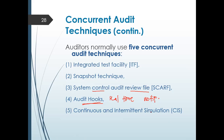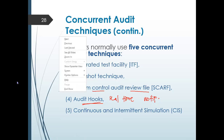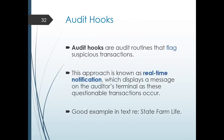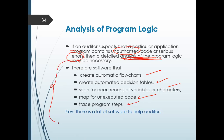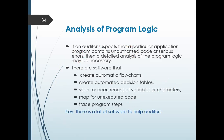For the analysis of program logic — if the auditor suspects or identifies that a particular application program contains unauthorized code or serious error, then a detailed analysis can still be done. There are software that can create automatic flowcharts, automated decision tables, scan occurrence of variables or characters, map unexecuted code, and trace program steps. These software will help the auditor further investigate and analyze the program logic.